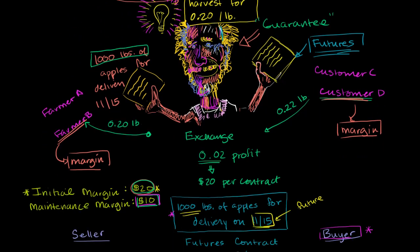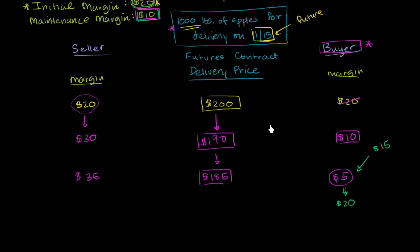So let's verify that this works out. They originally had a contract price of $200 for 1,000 pounds, so this is essentially $0.20 a pound. And as we said in the previous video, as the futures contract delivery price changes day by day, as we get closer and closer to the actual delivery date, what happens is that we transfer money between the buyer's margin account and the seller's margin account.